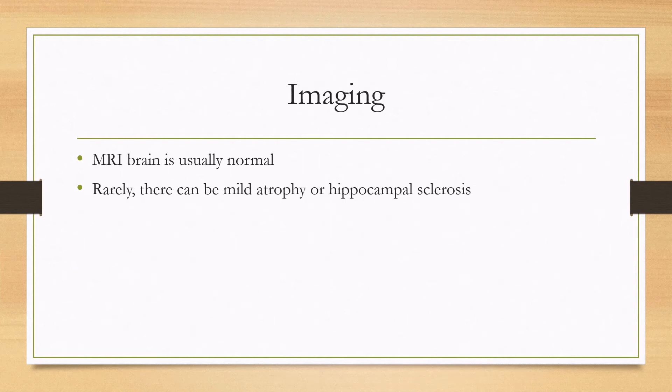In terms of imaging, the initial MRI at the onset of the disease is typically normal, and even as patients age, the MRI typically remains normal. However, there can be mild atrophy or hippocampal sclerosis in a subset of patients.